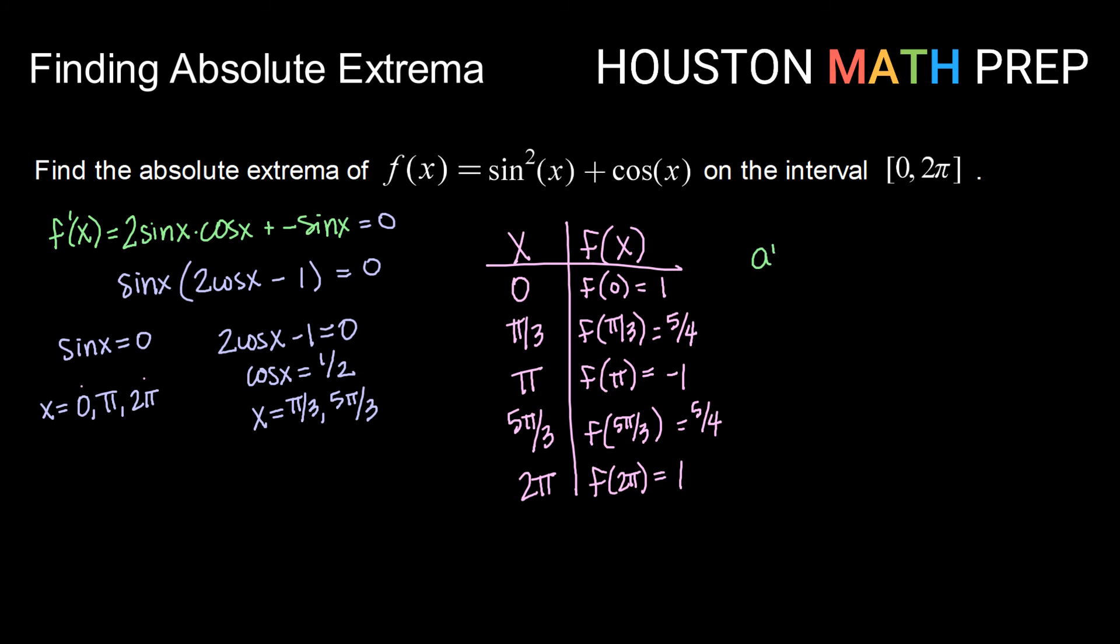Alright, so then analyzing these for our absolute minimum, we're looking for the smallest y value, and that occurs here at the point pi negative 1. And for our absolute maximum, we're looking for our largest y value. Notice here we actually have two points that have the same largest y value. When that occurs, you just have two absolute maximums. So I have an absolute maximum at pi over 3, 5 fourths, and at 5 pi over 3, 5 fourths. The same would be true if you had two y values that were the same lowest y value, you would just have two absolute minimums.